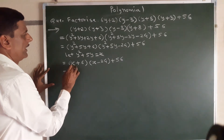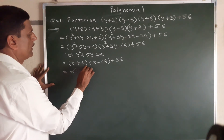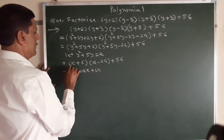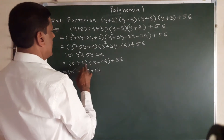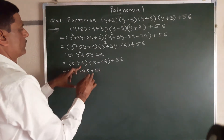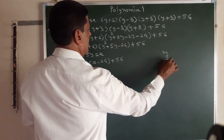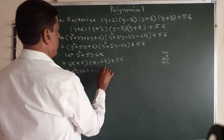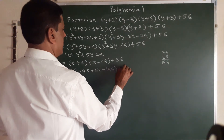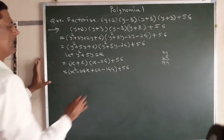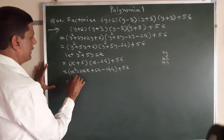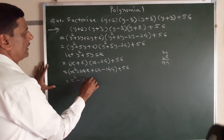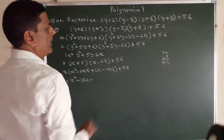We expand: x times x gives x squared, x times minus 24 gives minus 24x, 6 times x gives plus 6x, and 24 times 6 gives 144 — so minus 144. Plus 56 remains as is. Combining: x squared minus 24x plus 6x gives minus 18x, and minus 144 plus 56.